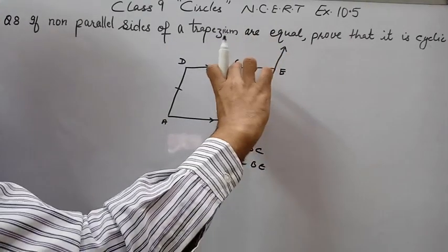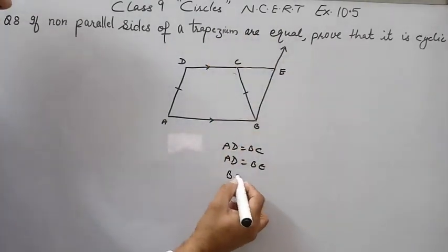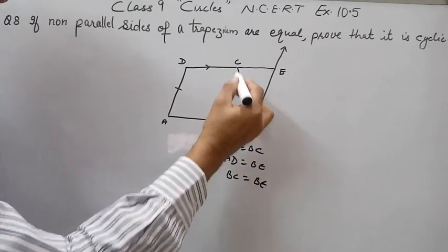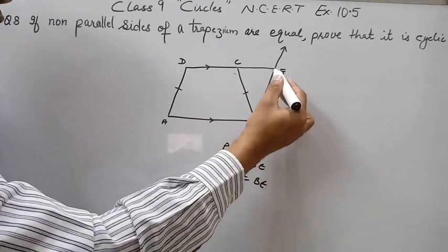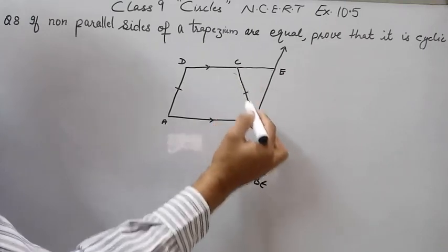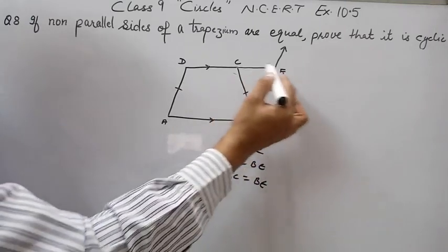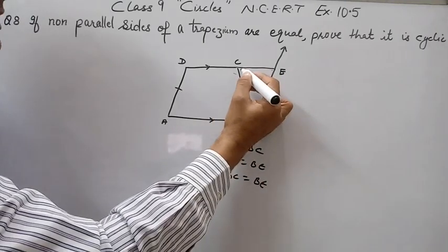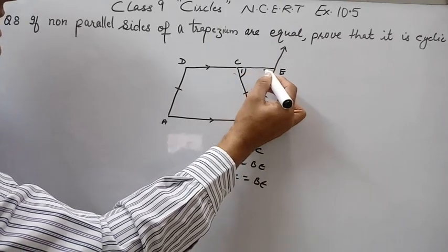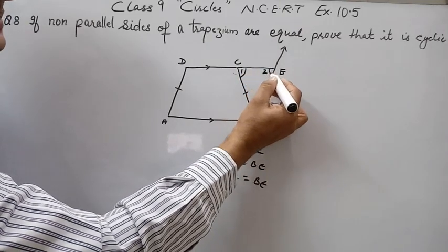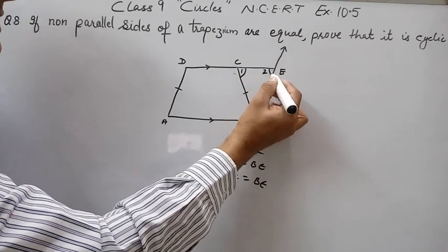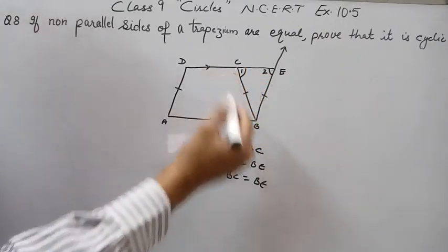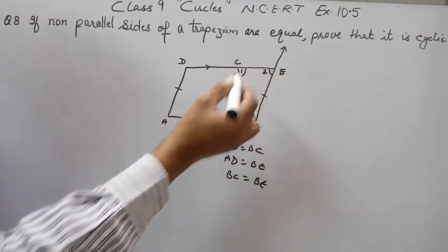It means BC is equal to BE. Since BC equals BE, triangle BCE is an isosceles triangle. So angle 1 equals angle 2, because in an isosceles triangle, angles opposite to equal sides are equal.